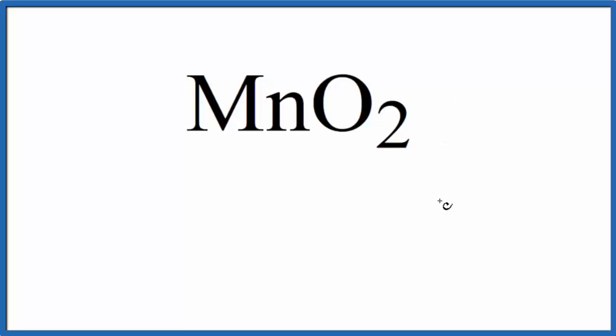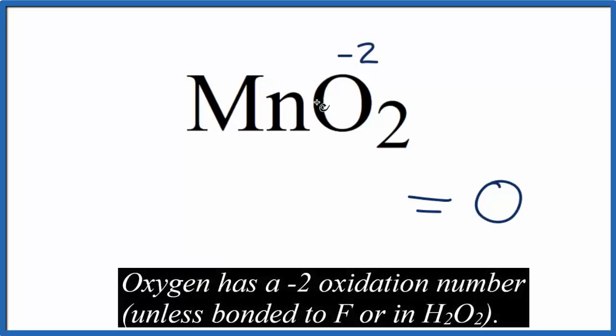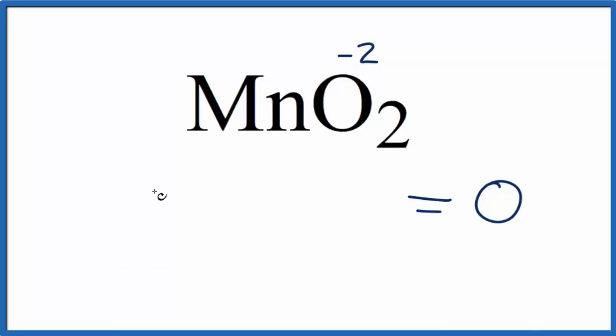We can set up an expression and say all of the oxidation numbers equal zero. We also know that oxygen is usually minus two, and we don't know what Mn is, so let's call that X. We'll say X plus two times minus two. We have two oxygens, and they're each an oxidation number of minus two.